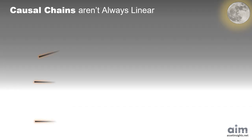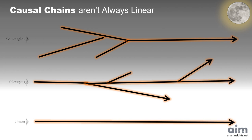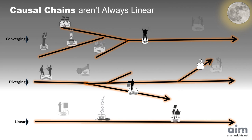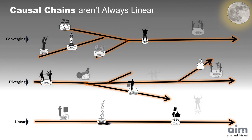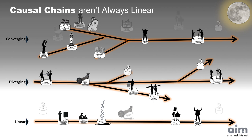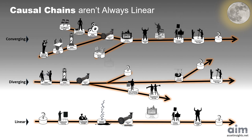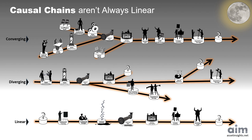Causal chains aren't always neat and linear. Real-world risks often involve tangled paths, with multiple causes converging on a single event, or one failure triggering a cascade of consequences. In reality, both converging and diverging chains can form around a single rupture. Missing those connections can leave blind spots in your risk analysis.